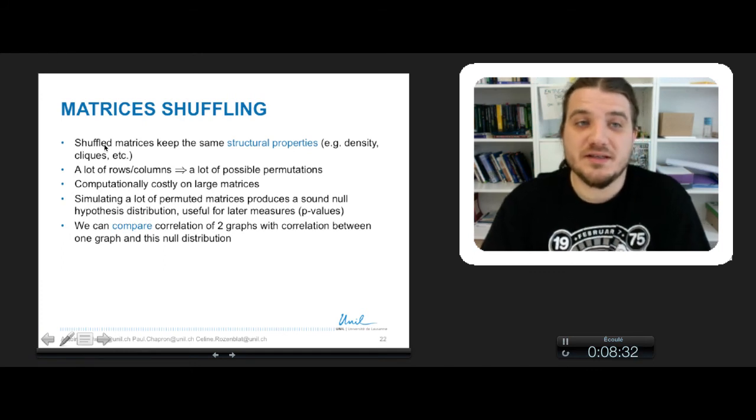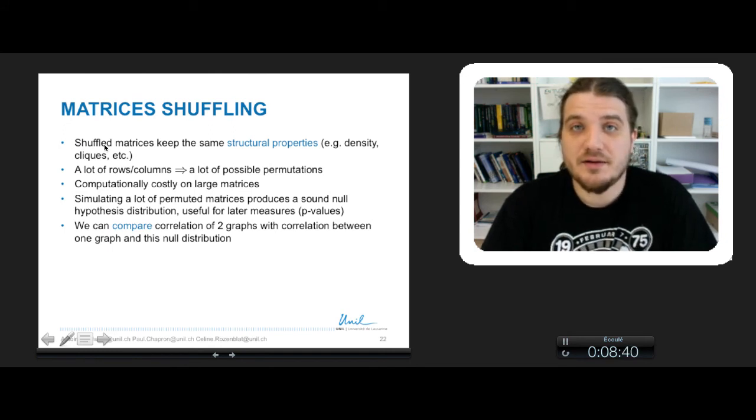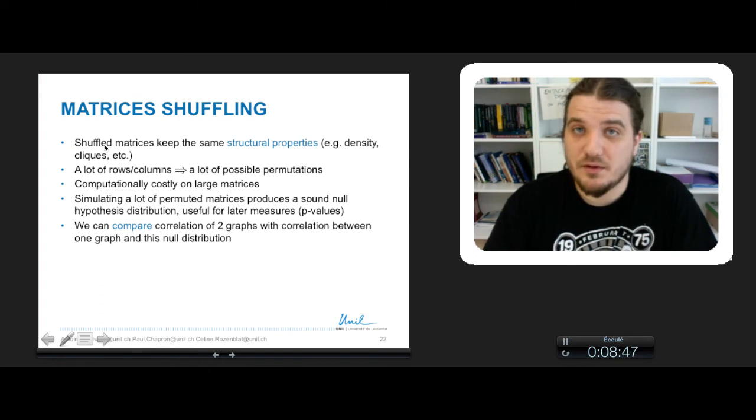So matrix shuffling keeps the same structural properties, so you don't affect the density, the cliques, and so on of the graph. It may take a long time, because a lot of rows and columns imply a lot of possible permutations, so to perform all of them will take some computation time.